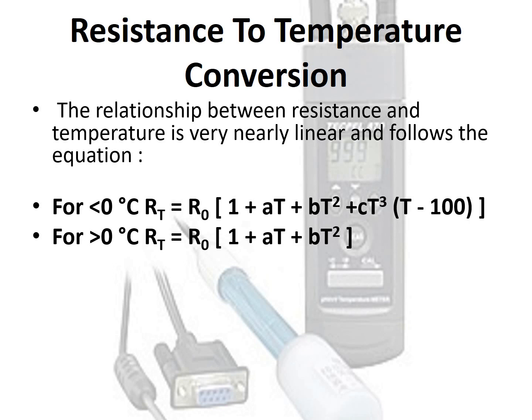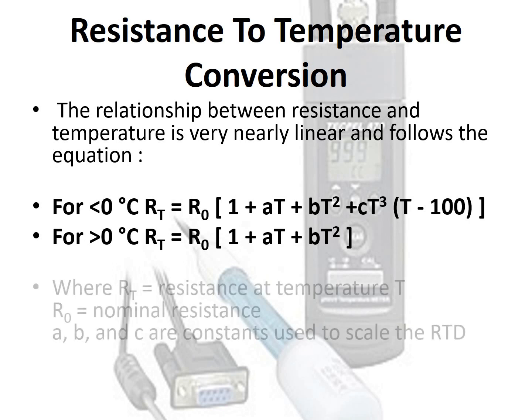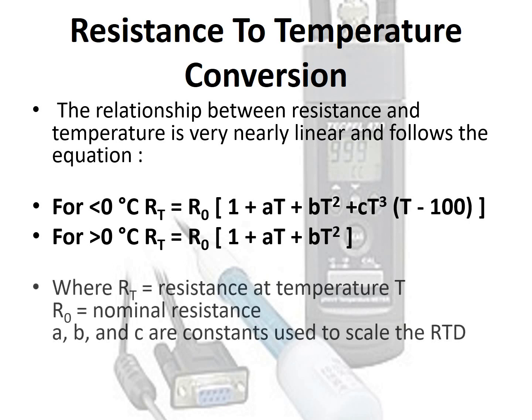Where RT equals the resistance at temperature T, R0 equals the nominal resistance, and A, B, and C are constants used to scale the RTD.